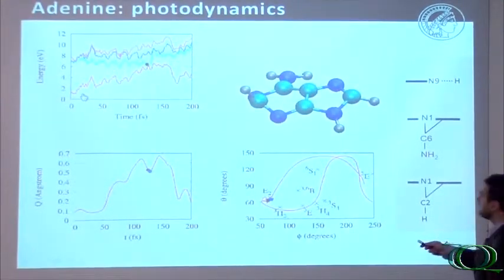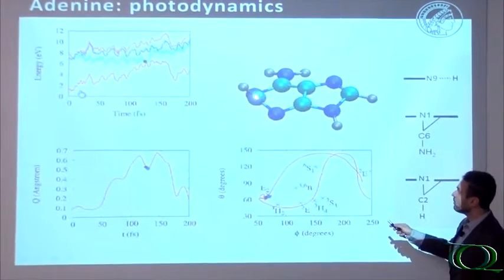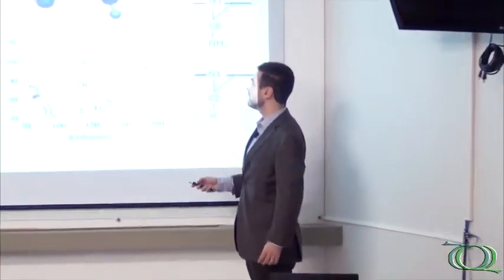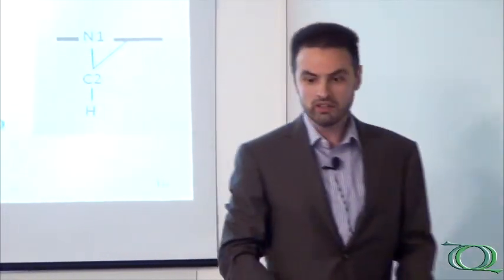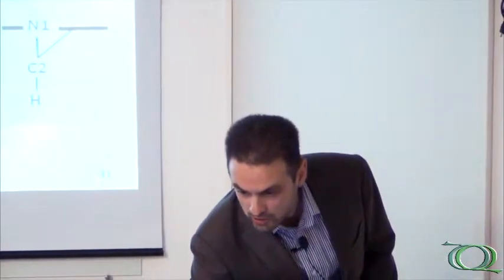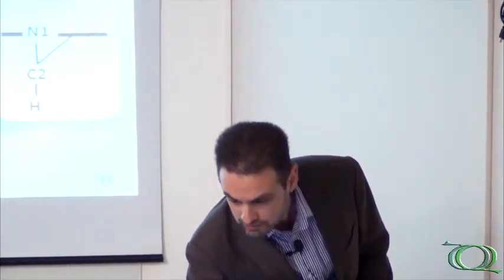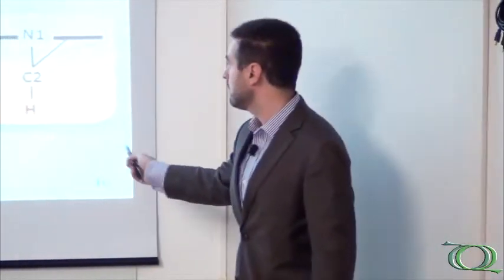And you see the crossing here was caused by the out-of-plane motion of the C2, of the carbon-2 out-of-plane. From the three conical intersections that I mentioned before, you see that this simulation shows that this one here is the one that caused the conical intersection. This one here was responsible for the crossing, for the internal conversion.